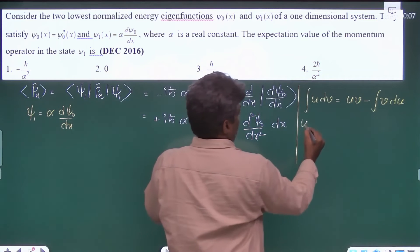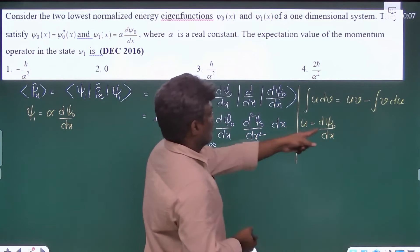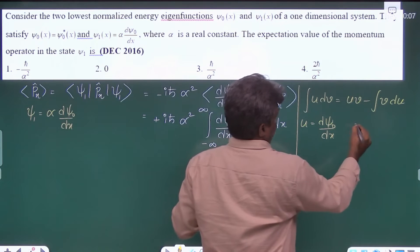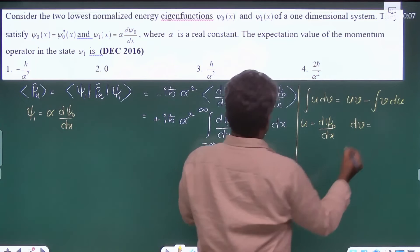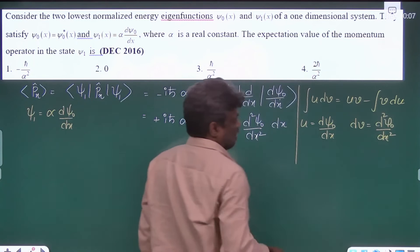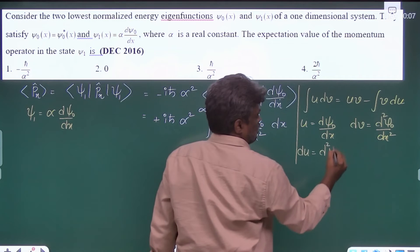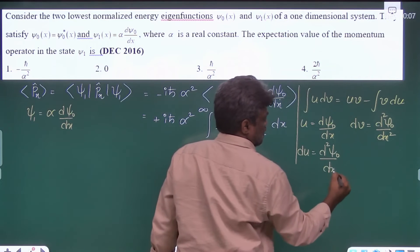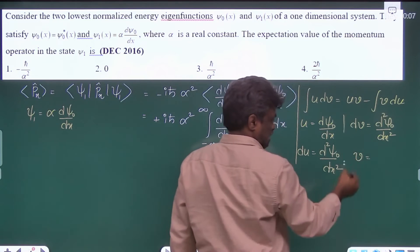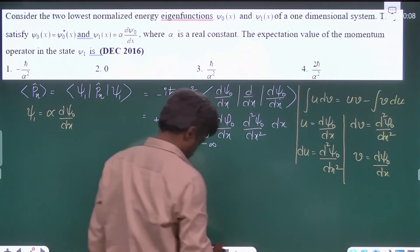Here u is nothing but d psi0 by dx—of course d psi0 by dx is again related to psi1, we will substitute later—and dv is nothing but d square psi0 by dx square. And here we want du, so du is equal to d square psi0 by dx square, and here we need v. From this we will get v is nothing but d psi0 by dx.